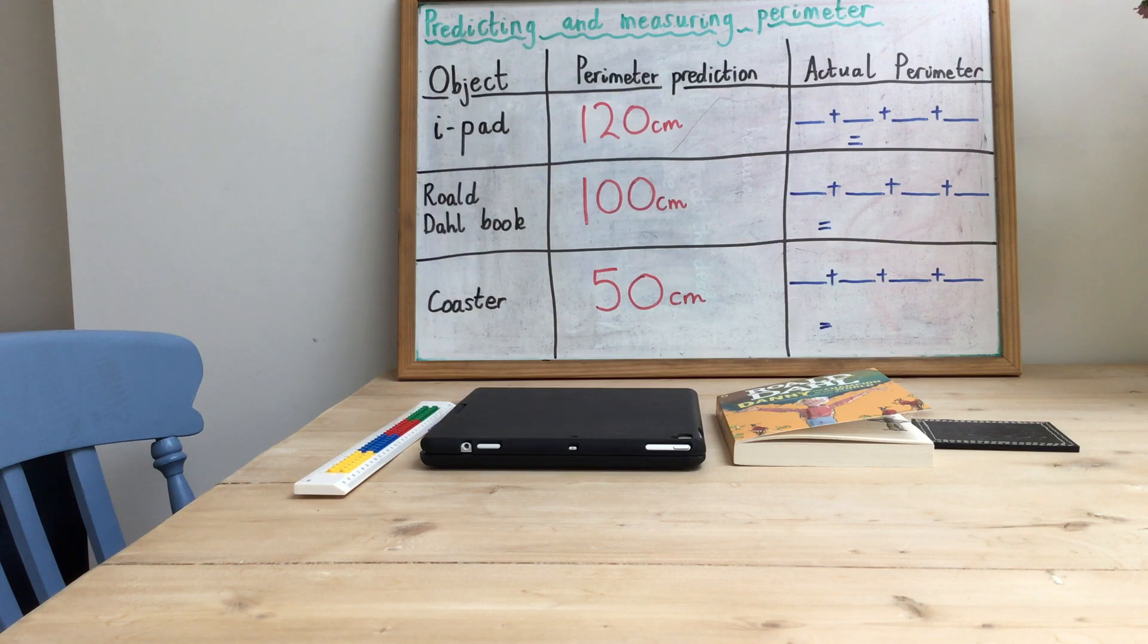If, for example, you wanted to measure the perimeter of really big things like the whole perimeter of one of the rooms in your house, you might want to use things like your footsteps—how many footsteps is the perimeter of your kitchen, for example.